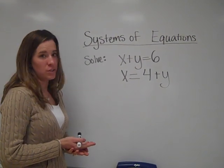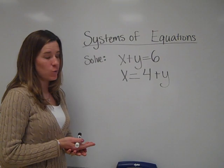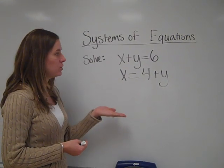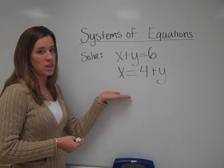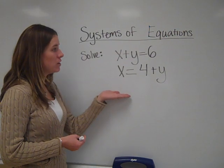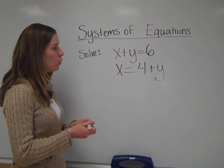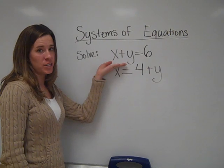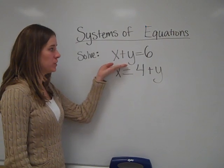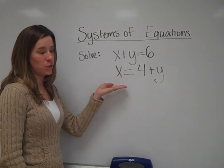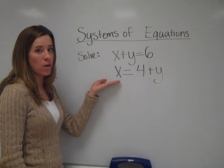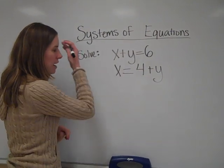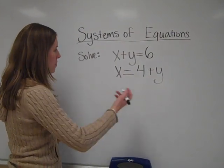In order to do the elimination method, you have to make sure that all of the columns are lined up by their like terms. As you can see, the columns are not lined up correctly, so we're going to rewrite it. I like the first equation, x plus y equals 6, but I don't like the second equation because my x and my y are not on the same side of the equation.